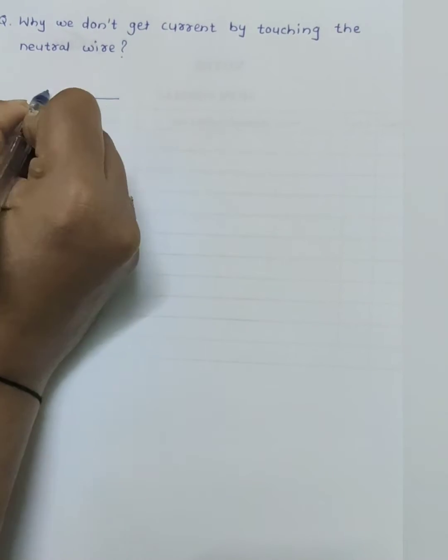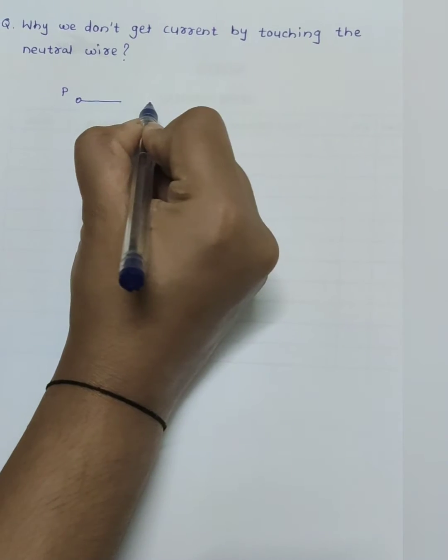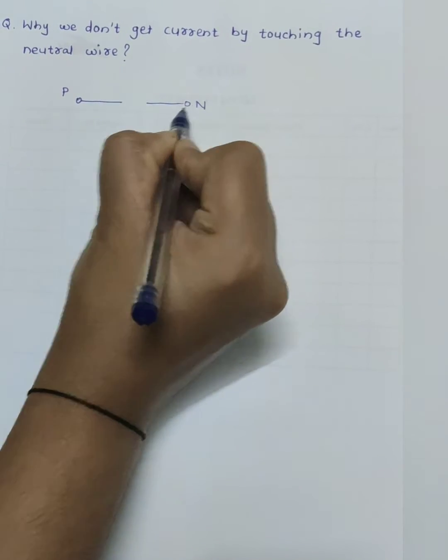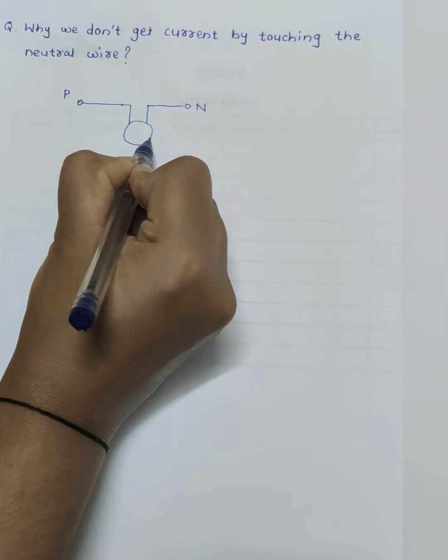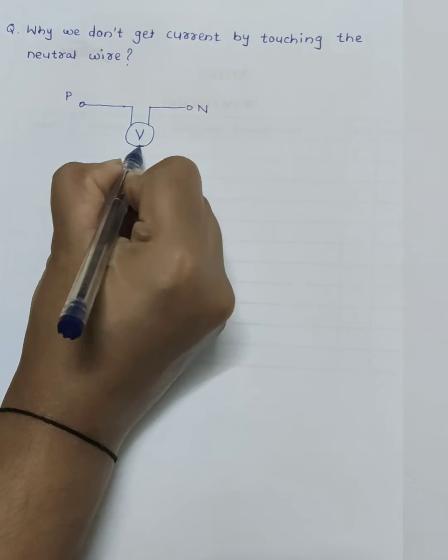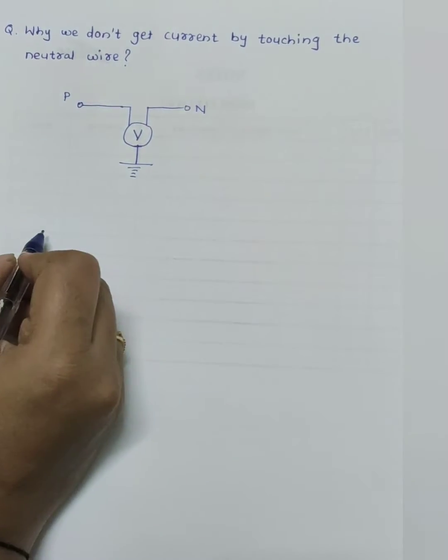First of all, we will see the basic concept about phase and neutral wire. Now see the diagram here. If I connect a voltmeter between phase and neutral, then we all know that this voltmeter shows 220 volt reading. That means 220 volt voltage is in between phase and neutral.